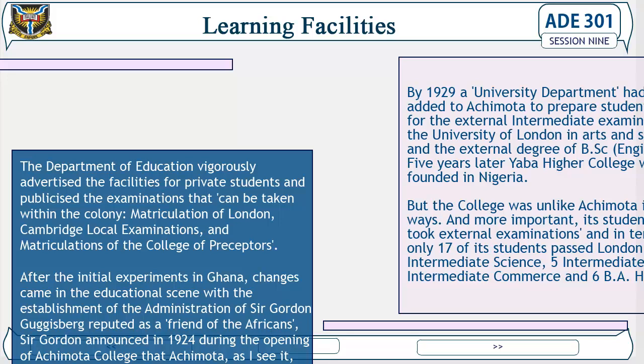After the initial experiments in Ghana, changes came in the educational scene with the establishment of the administration of Sir Gordon Guggisberg, reputed as a friend of the Africans. Guggisberg announced in 1924, during the opening of Achimota College, that Achimota would become more of the nature of a university college than a secondary school. By 1929, a university department had been added to Achimota to prepare students mainly for the external intermediate examinations of the University of London in arts and science, and the external degree of BSc Engineering. Five years later, Yaba Higher College was founded in Nigeria, but unlike Achimota, its students rarely took external examinations — in ten years, only 17 of its students passed London Intermediate Science, five Intermediate Arts, six Intermediate Commerce, and six BA Honours.